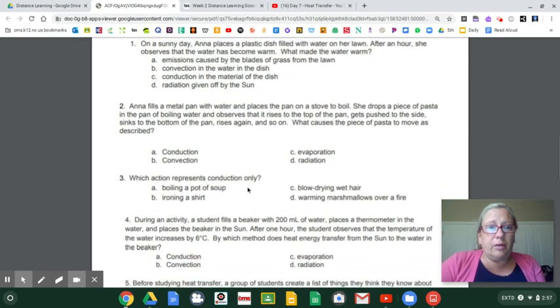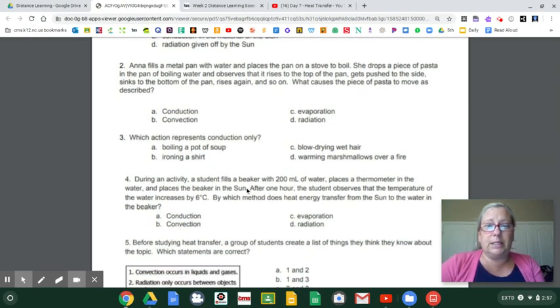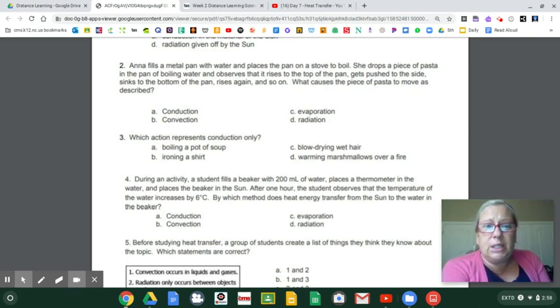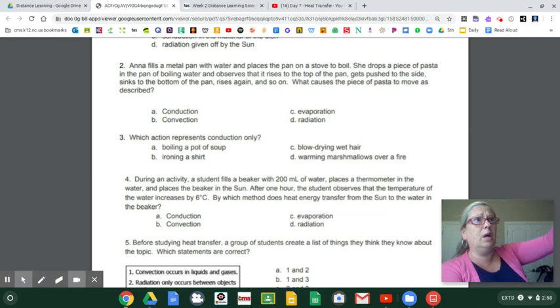Number two, Anna fills a metal pan with water and places the pan on a stove to boil. She drops a piece of pasta in the pan of boiling water and observes that it rises to the top of the pan, gets pushed to the side, sinks to the bottom, rises, and so on. Oh, it sounds like a convection current because it's rising and it's going down and it's rising and it's going down in the middle of a hot water atmosphere. So I think I know what it is, especially when it told me that the pasta was making like a current by going up and going back down. So I think you know this.